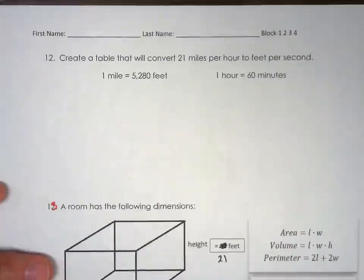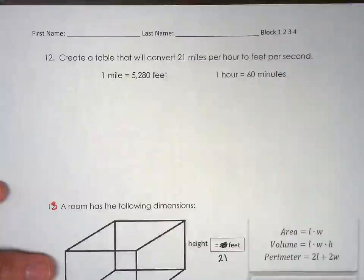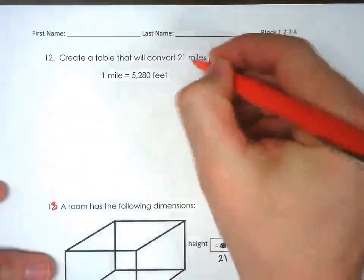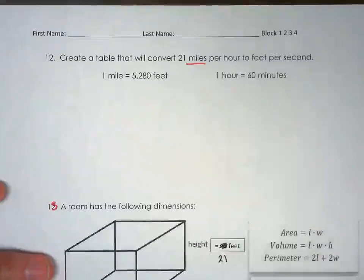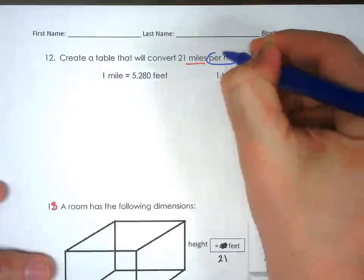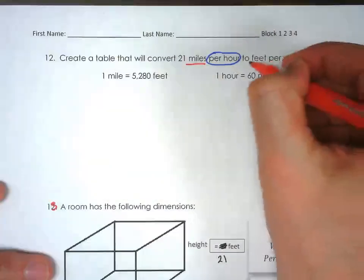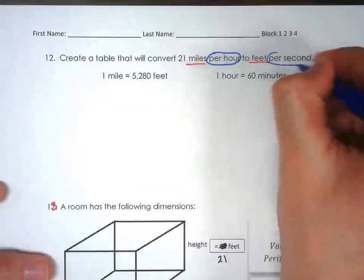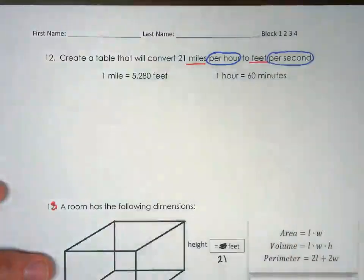This is a dimensional analysis question. Create a table and convert 21 miles per hour. We have two different things here: miles per hour. We want to change that to feet per second. That's what we want to do here.